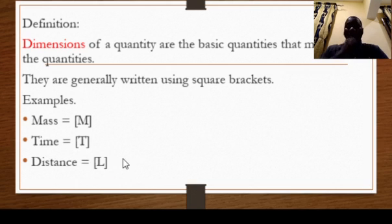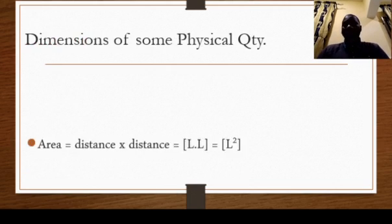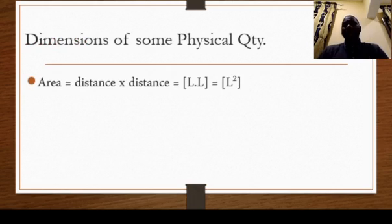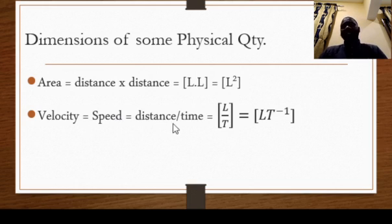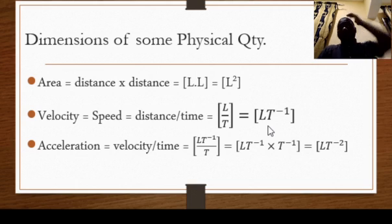Let's look at more examples. Area is distance times distance, which is length times length, giving [L²]. Dimension of velocity and dimension of speed are the same. The formula is distance over time; distance is [L] and time is [T], so we write velocity as [LT⁻¹].